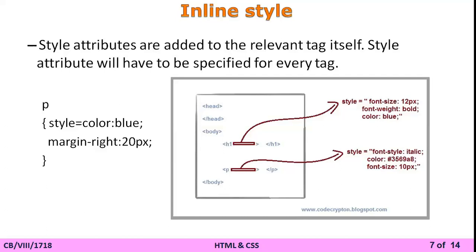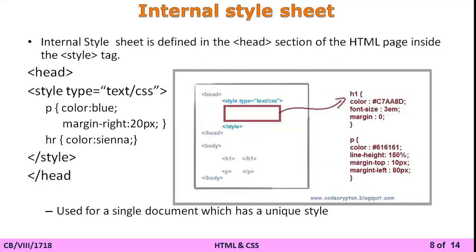The second method is the internal style sheet. Internal style sheet means you define the style sheet inside the HTML code but not in the line of a particular tag. In the head section of the HTML document, after the title tag, you start a style tag: <style type="text/css"> and write your CSS there, then close the style tag and the head tag.